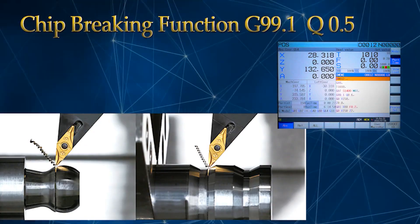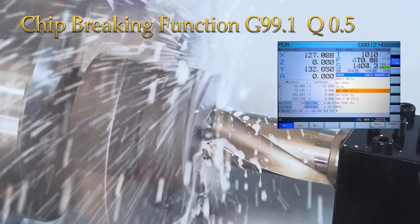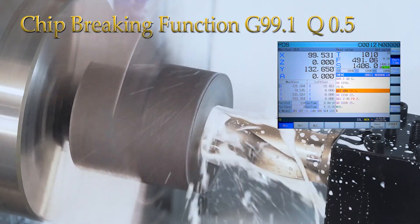Chip breaking function G99.1 Q0.5 - U drill uses this special code. This software is used for U-drill, grooving, and large cuts.